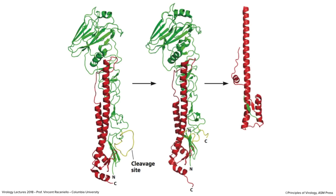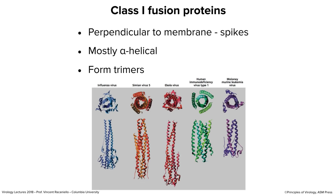This kind of acid-mediated fusion with reorientation of the fusion peptide is typical of class one fusion proteins, found in influenza virus, paramyxoviruses, Ebola virus, HIV, and mouse retroviruses. They all form trimers with extended alpha-helical conformations, the fusion peptide at the top. All are perpendicular to the membrane, forming spikes, mostly alpha-helical, forming trimers.